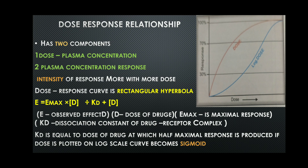KD is similar to KM. KD equals the dose of the drug at which half-maximal response is produced when dose is plotted on a log scale. From the response-versus-dose curve in the figure, you calculate KD by taking 50% of the response and measuring the corresponding dose. The normal dose curve is rectangular hyperbola and the log-dose curve is sigmoid.